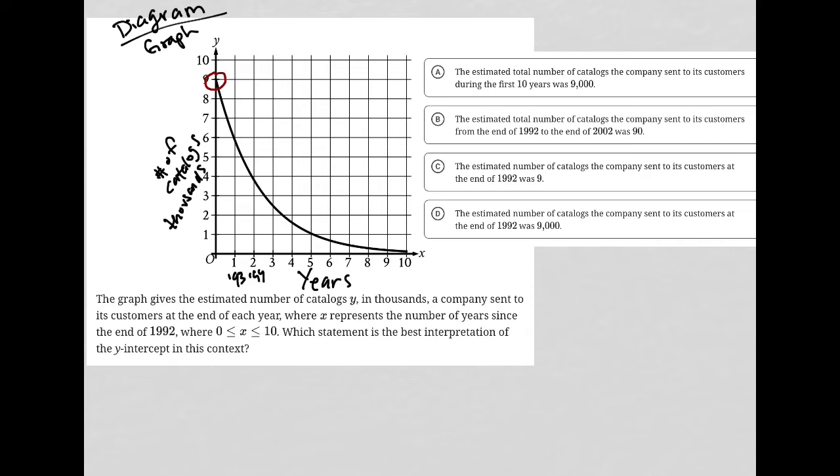Which statement is the best interpretation of the y-intercept in this context? The y-intercept represents what's happening at the end of 1992, first of all. And it tells us that we're at 9, which is really 1,000, so this is really 9,000. 9,000 catalogs were sent to customers in 1992. That's how I would read that.